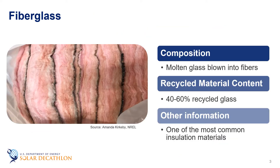First we'll start with fiberglass. Fiberglass consists of extremely fine glass fibers and is one of the most common insulation materials on the market. Fiberglass insulation is made from molten glass that is spun or blown into fibers. Most manufacturers use 40 to 60 percent recycled glass content in their fiberglass insulation.